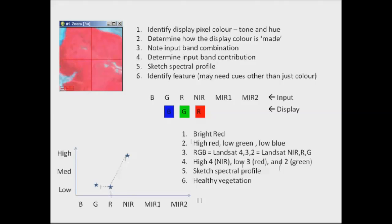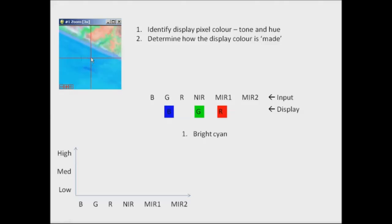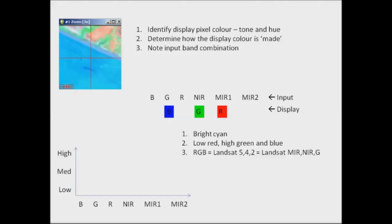Let's go through one more example with a different band combination — this time a false natural colour composite, introducing a mid-infrared band, a near-infrared band and the green being RGB. First, identify the pixel colour and I would say it's a bright cyan colour. Cyan is a combination of green and blue that's relatively bright, so that would be a high contribution of those but little contribution from red. The input band combination is RGB as bands 5, 4, 2 in the Landsat combination — mid-infrared, near-infrared and green. Band contribution therefore would be low in the mid-infrared, high in the near-infrared and high in green.